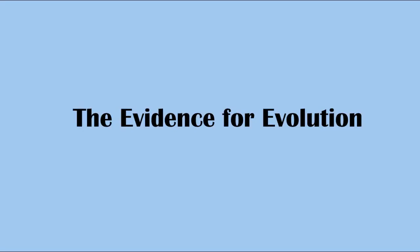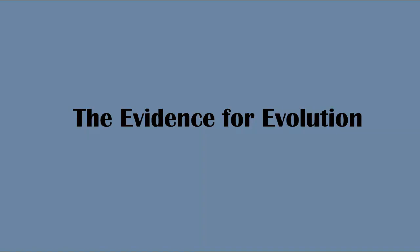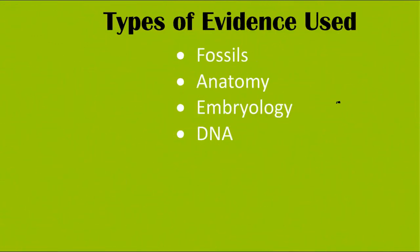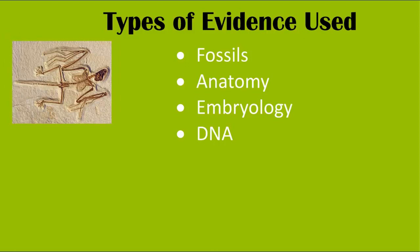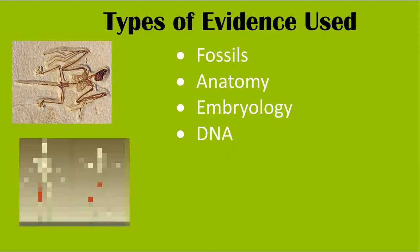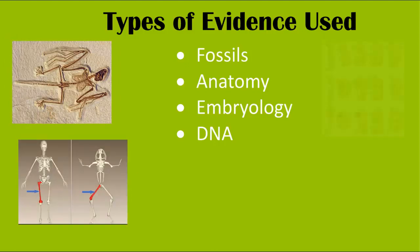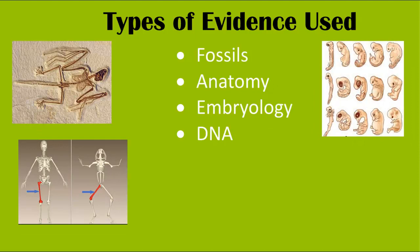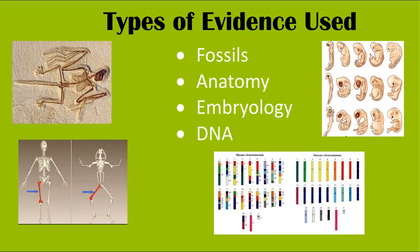This lecture is going to be about the evidence that we have to show us evolution. We use four different types of evidence to support this theory of evolution: fossils, comparative anatomy, embryology, and comparative genetics or the study of DNA.